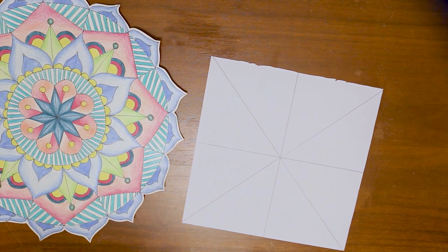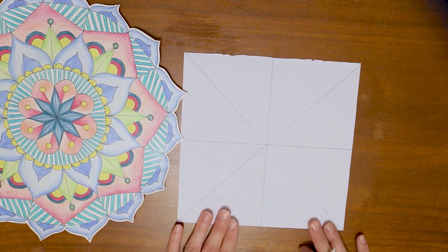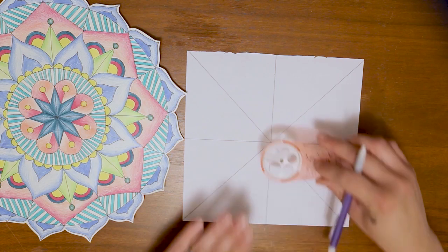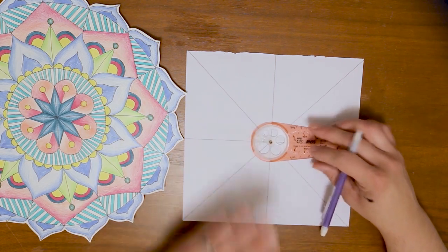Now I'm going to be using a compass to create some circles. If you do not have a compass at home, you could use different sized circular objects that you find around your house, or you can use a string and some pencils. I'm going to use the compass that we use at my school.